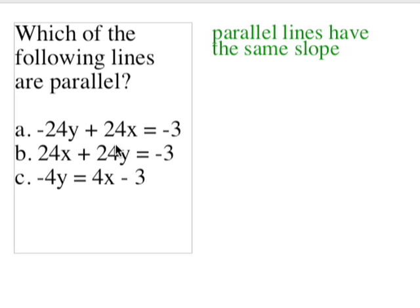Well, when I move the 24x to the other side, it becomes a negative 24. When I divide that by a negative 24, which is the y coefficient, I'm just going to get 1. So that one has a slope of 1, a positive 1.